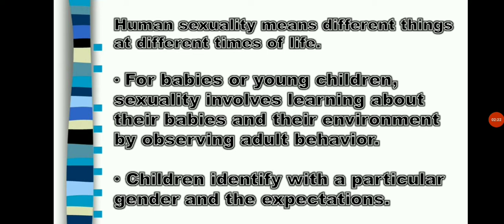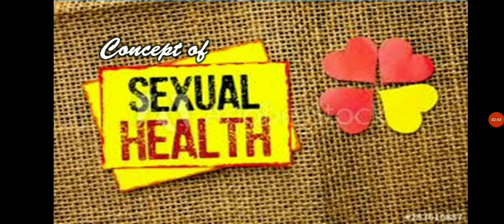Children identify with a particular gender and the expectations that go along with it. Adolescents experience many changes due to the development of body structure arising from sexual maturity. Adolescents develop physical characteristics and begin to learn the roles of male and female. In mature women, formal age marks the beginning of their reproductive years, and men, as they age, also have to make adjustments.